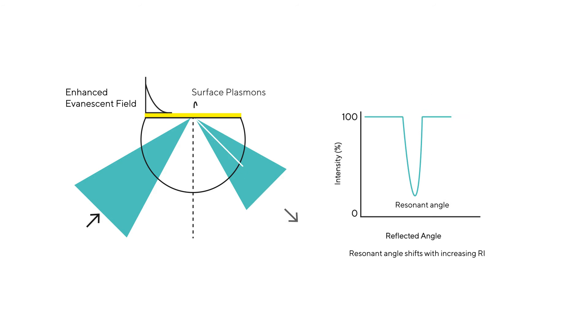If a thin gold layer is placed at the interface, then some of the reflected light is absorbed, reducing the intensity of reflected light at a specific angle known as the resonance angle.